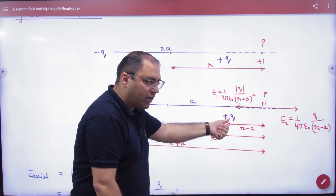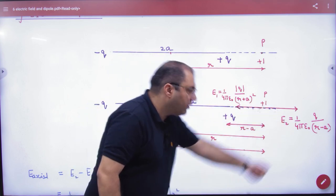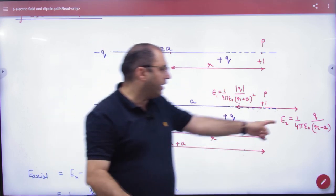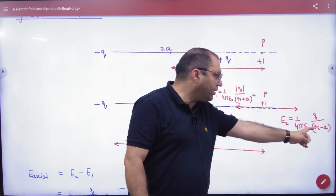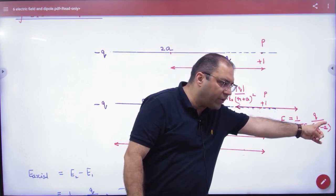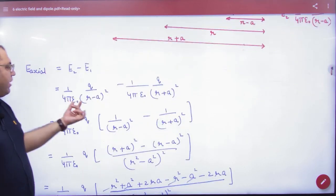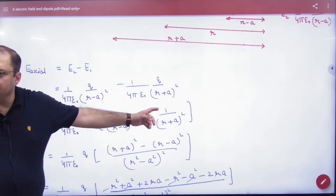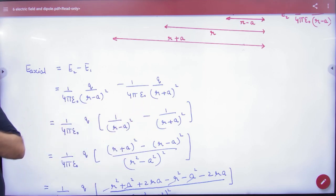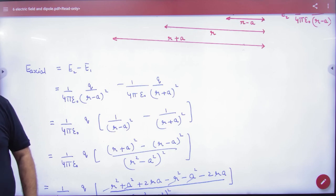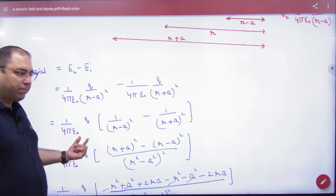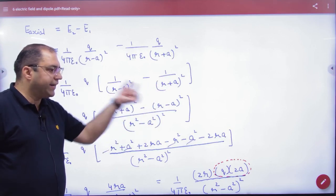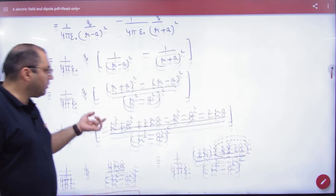So this plus q charge repels it, this minus q charge attracts it. Which value is bigger, right or left? Right, because the denominator is smaller, r minus a squared. So the net E will be the larger value minus the smaller value. Take LCM. This term is (r - a)² and this term is (r + a)². The LCM is the product.